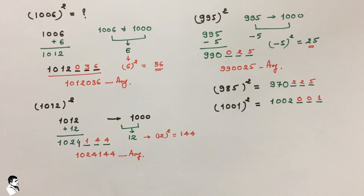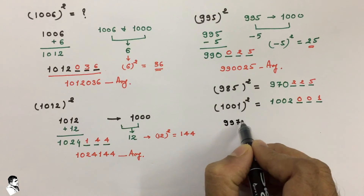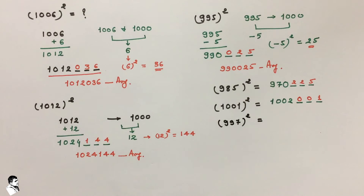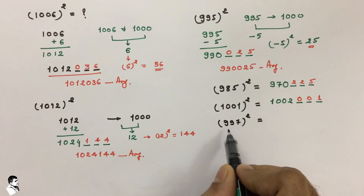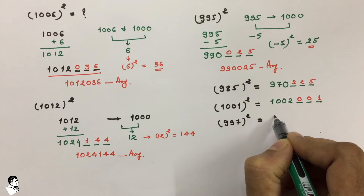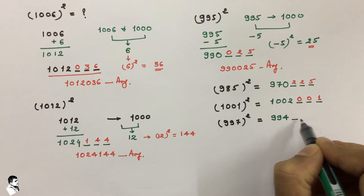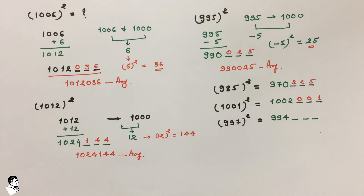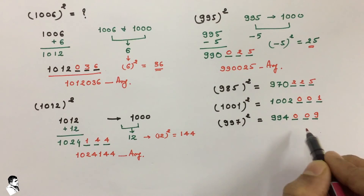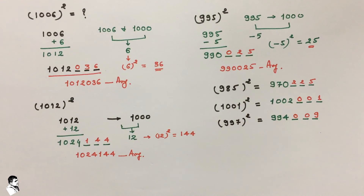Now take another value: 997, which is below 1000. Comparing 997 with 1000, it is 3 less than 1000, so the difference is minus 3. We subtract 3 from 997, giving 994. Leave 3 spaces after 994. The square of minus 3 is 9, so we write 009 in those 3 spaces. This is the final answer for the square of 997: 994009.